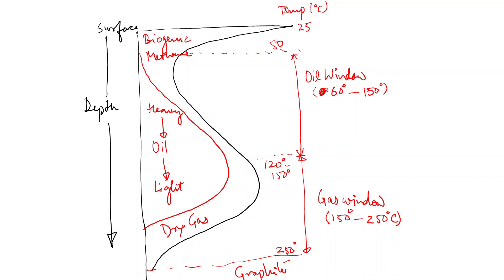This concludes the concept of the generation and maturation of kerogen. In the next class, we shall discuss the properties of petroleum generated from kerogen, and then start with the concept of the petroleum system. For reading, recommended books include R.C. Selley's Elements of Petroleum Geology, or Petroleum Geology by Levorson. Selley is a bit easier to understand than Levorson.